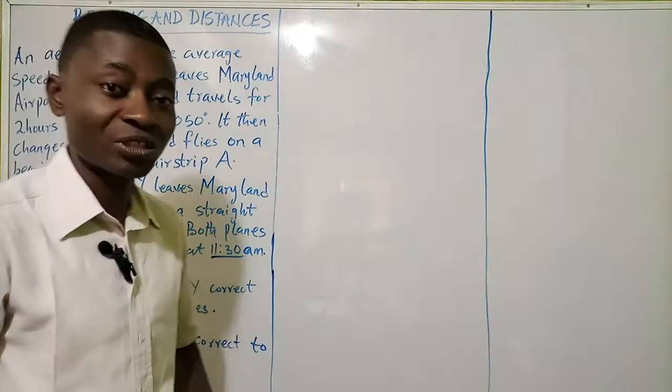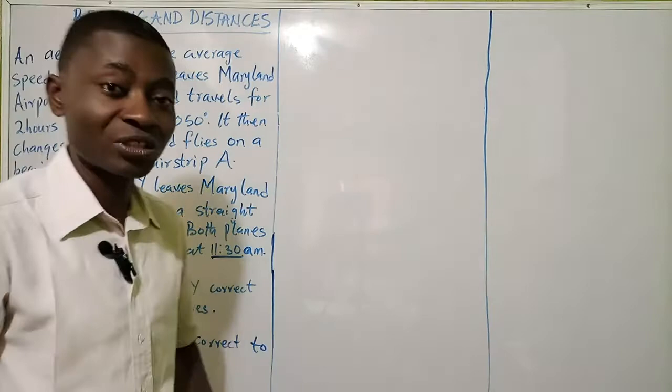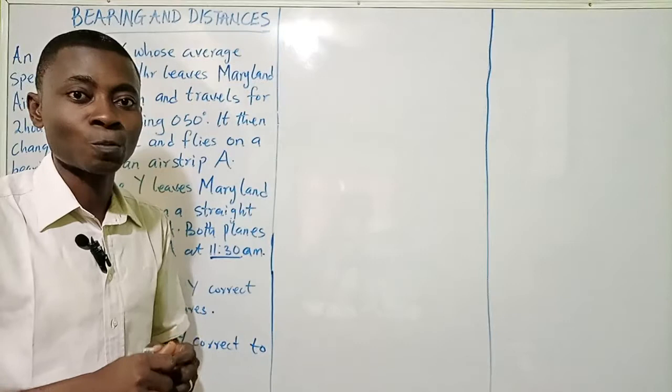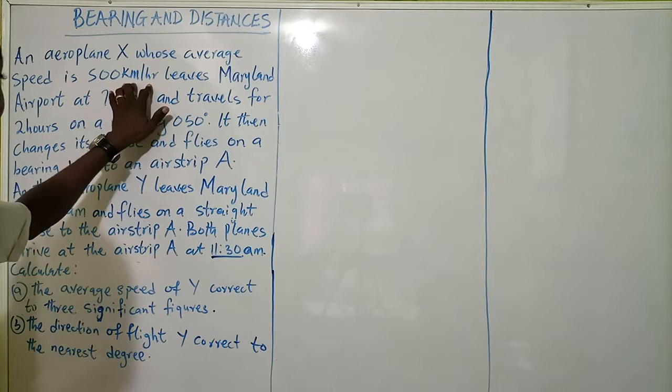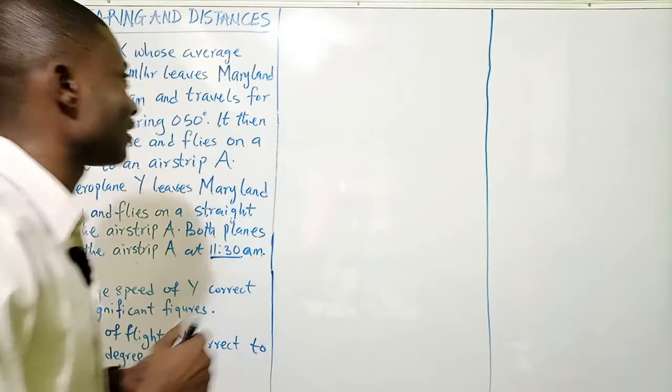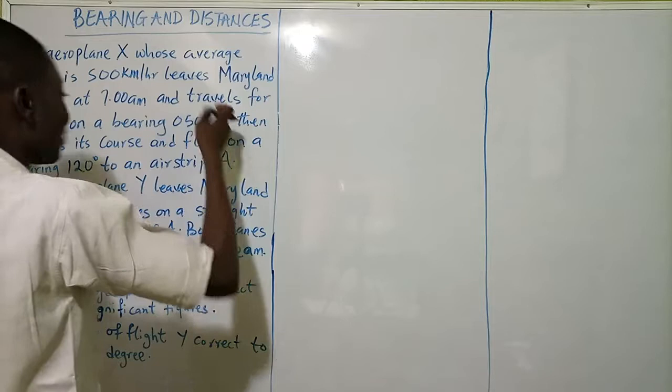We are expected to calculate the average speed of Y correct to three significant figures, and the direction of flight of Y correct to the nearest degree. Now this is actually very simple. The speed of 500 kilometres per hour means that for every one hour this plane covers 500 kilometres — you will see why that is very important.